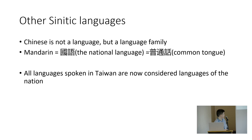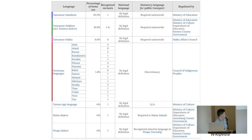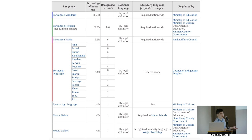In Taiwan, all languages spoken are now considered national languages — the term 'guóyǔ' is politically charged so we tend to just say 'zhōngwén.' Taiwan has almost 40 national languages: Mandarin, Taiwanese Hokkien, Hakka, and about 30 indigenous Austronesian languages, which are totally different from Chinese, don't use Chinese characters, and are very diverse.